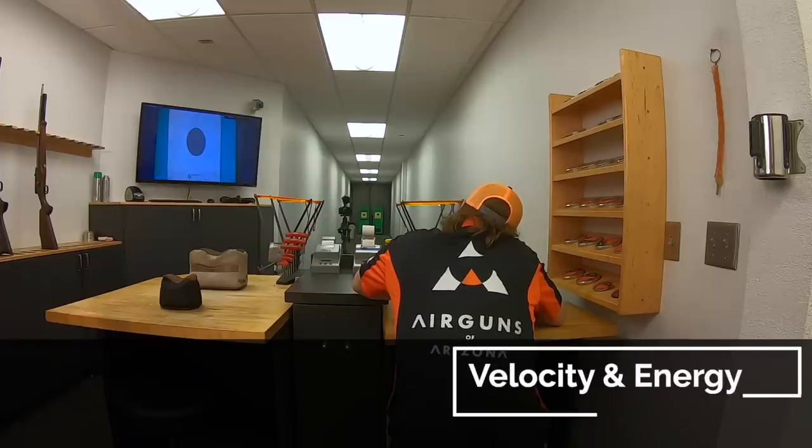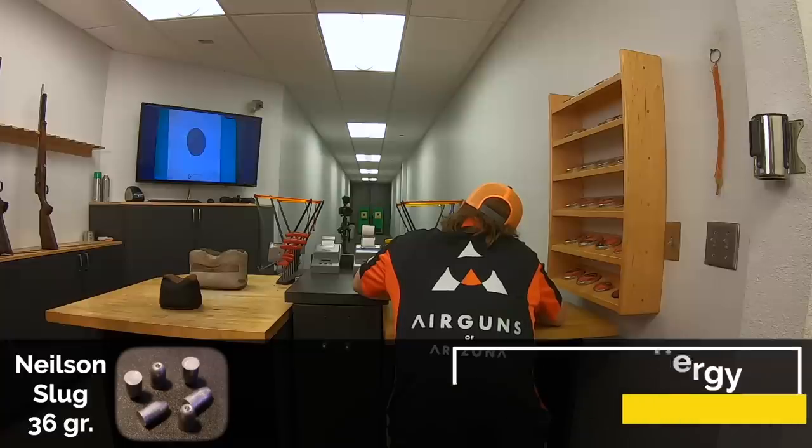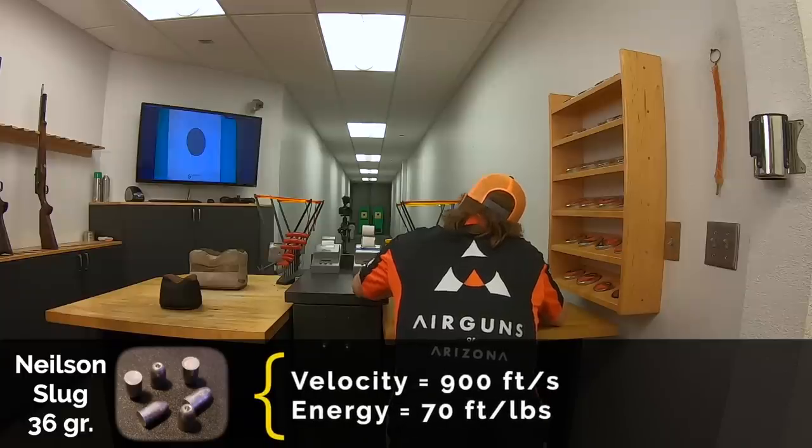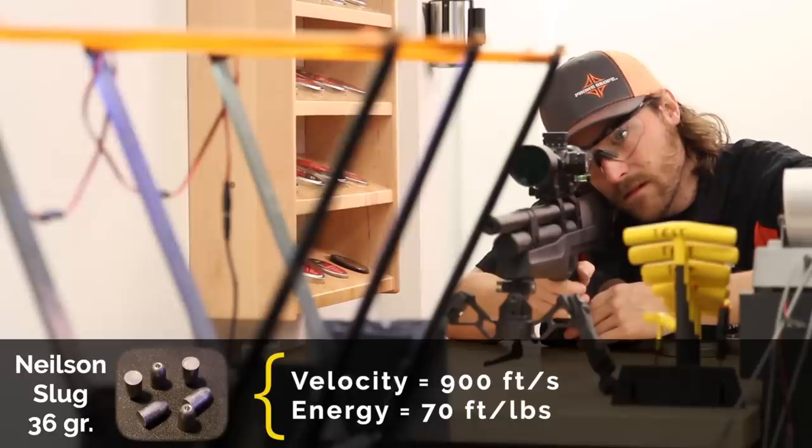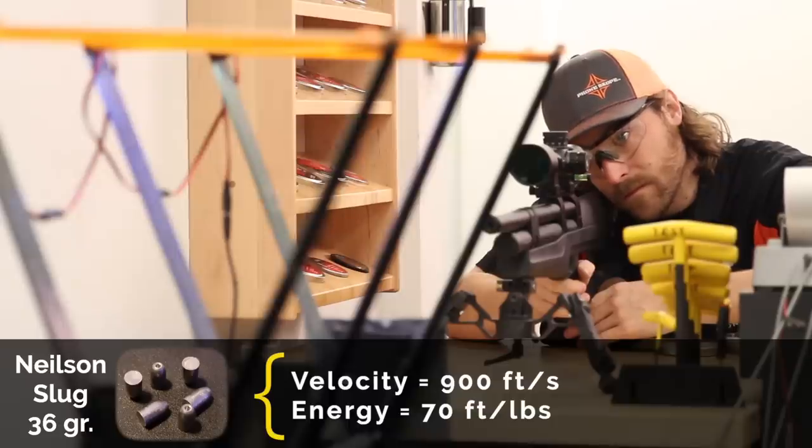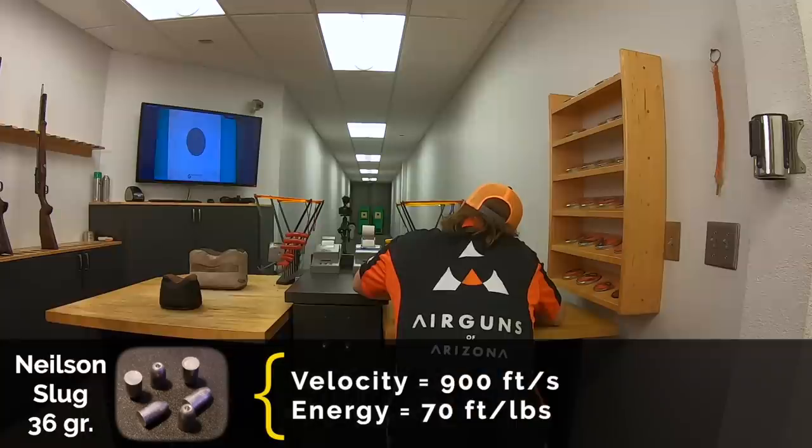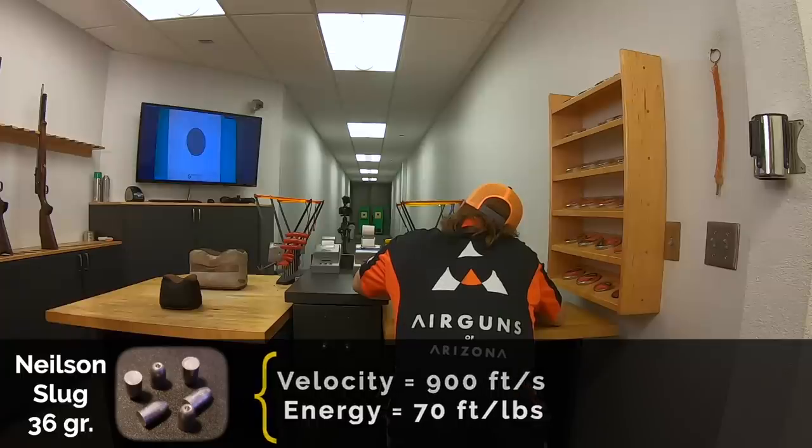While we're on the range, we went ahead and ran some heavier slugs type projectiles through this gun, just to show you what it is capable of. This video is made for pellets, that's what we optimized this one for. But just to show you what the gun is capable of, we ran some 36 grain Nielsen slugs through it, averaging on the highest power settings about 880 to 900 feet per second, which if you calculate it out is just over 70 foot pounds. So this 22 caliber gun can produce anywhere from 20-30 foot pounds like we're doing here all the way up to 70. For any kind of pest elimination or hunting, this gun would offer a lot more power than any other 22 competitor currently in its arena.